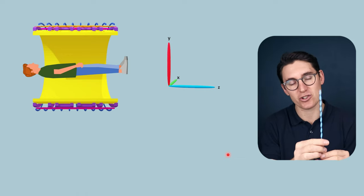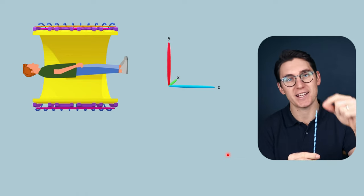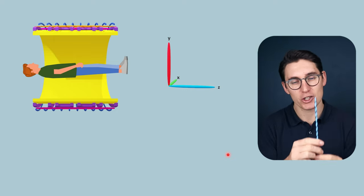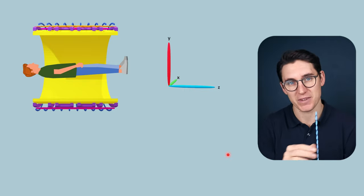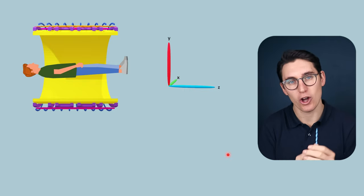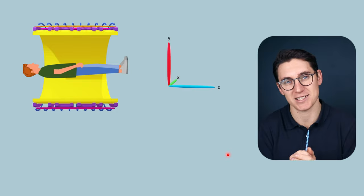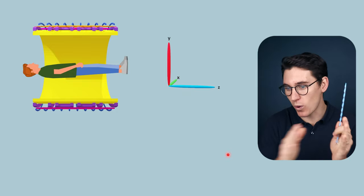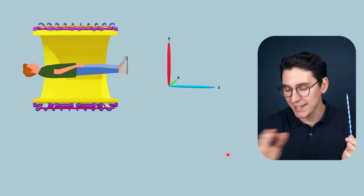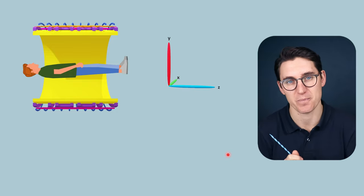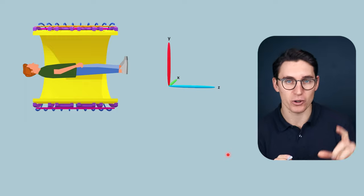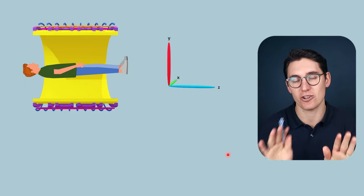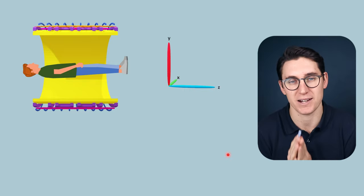Once we've gained transverse magnetization, we can stop the radio frequency pulse. Once stopped, two independent processes happen: T2 relaxation, or loss of transverse magnetization predominantly due to the dephasing of spins, as well as T1 relaxation or gain of longitudinal magnetization. Different tissues have different rates of both T2 and T1 relaxation, and it's the differences in those rates that give us contrast within our image.